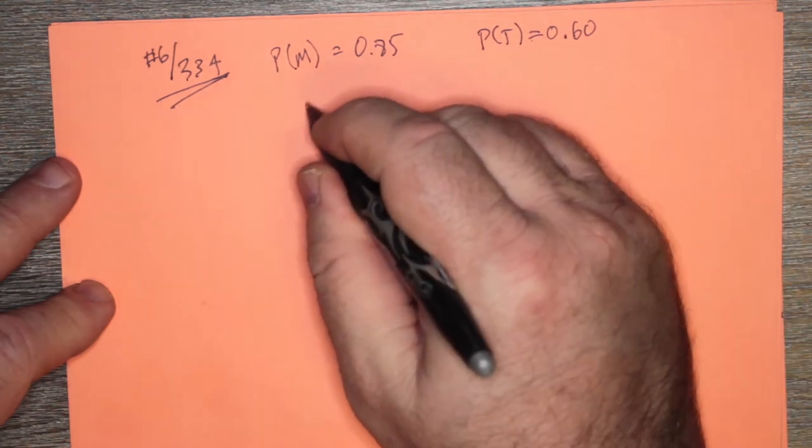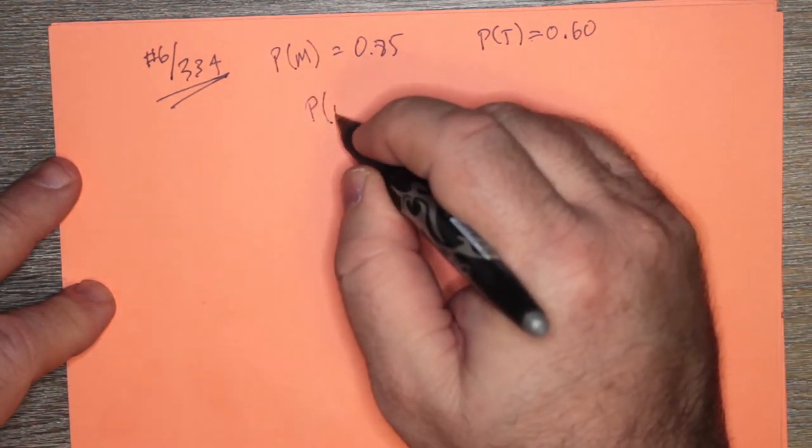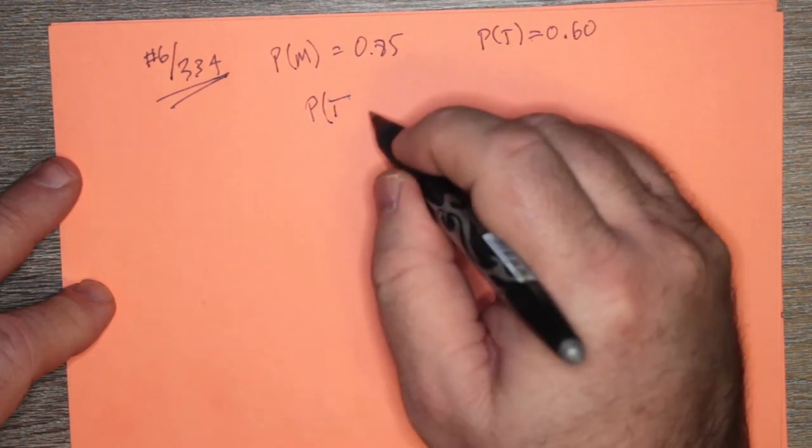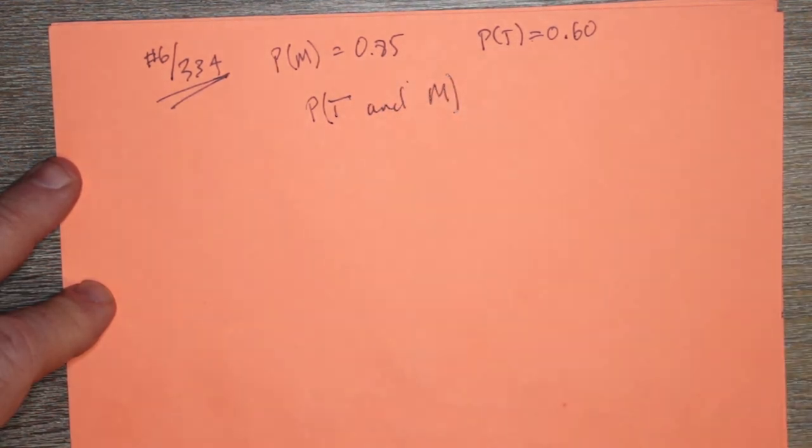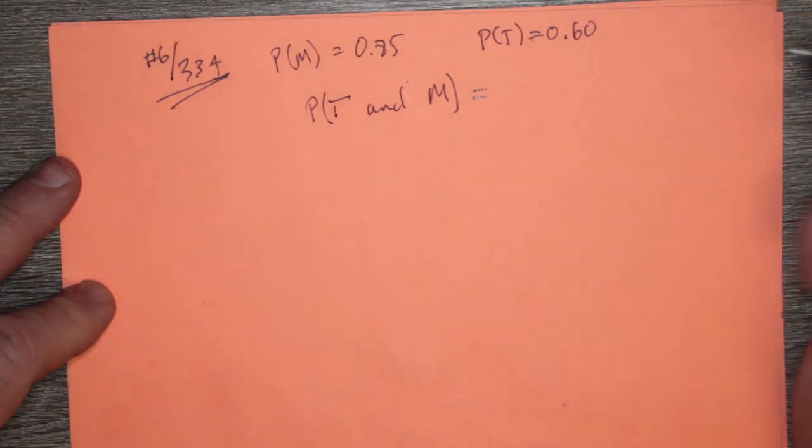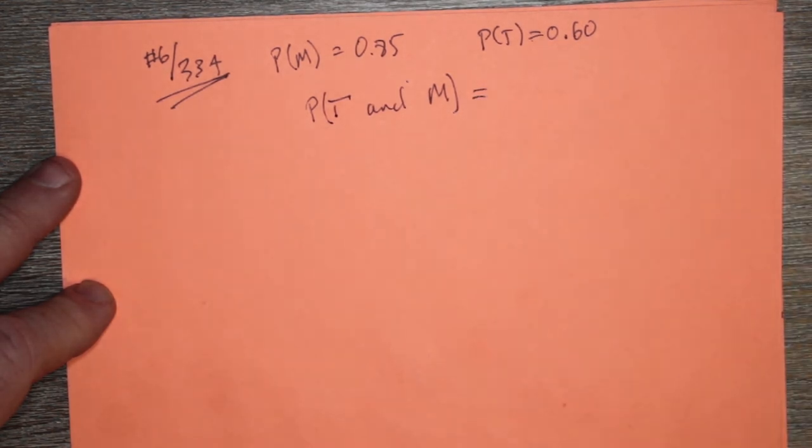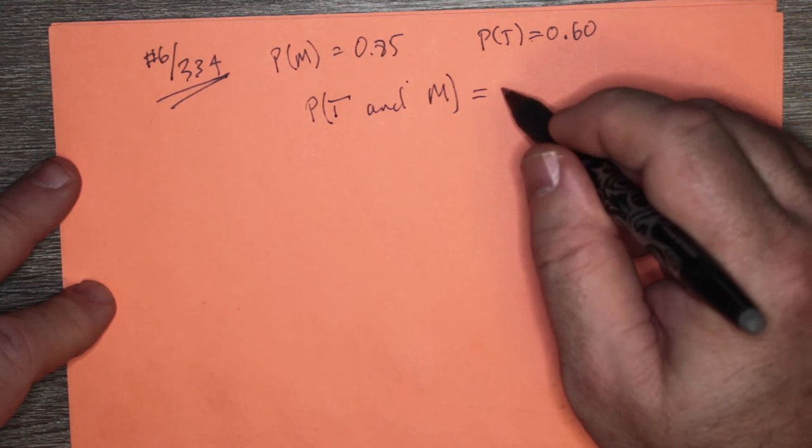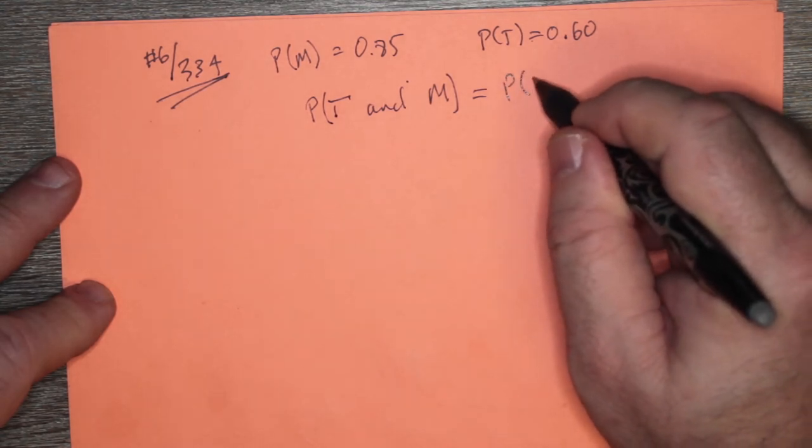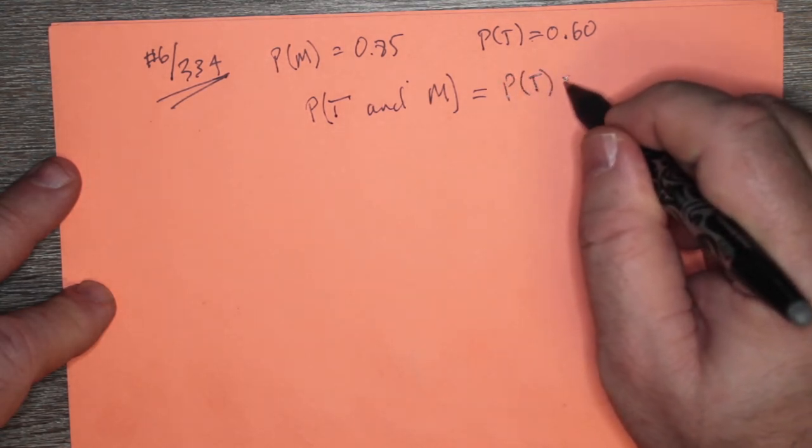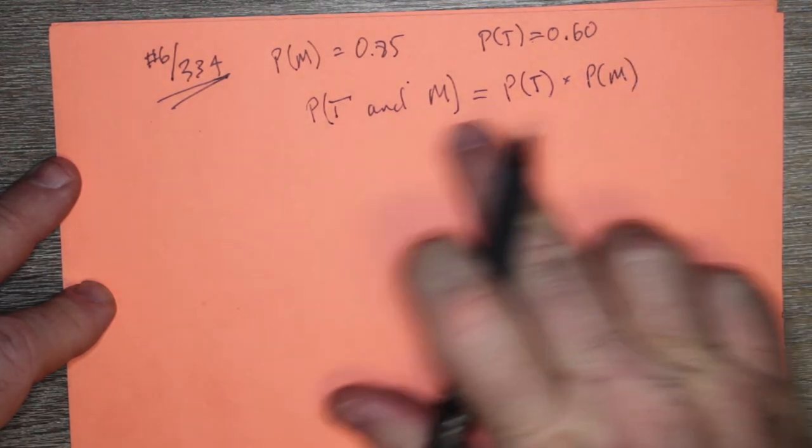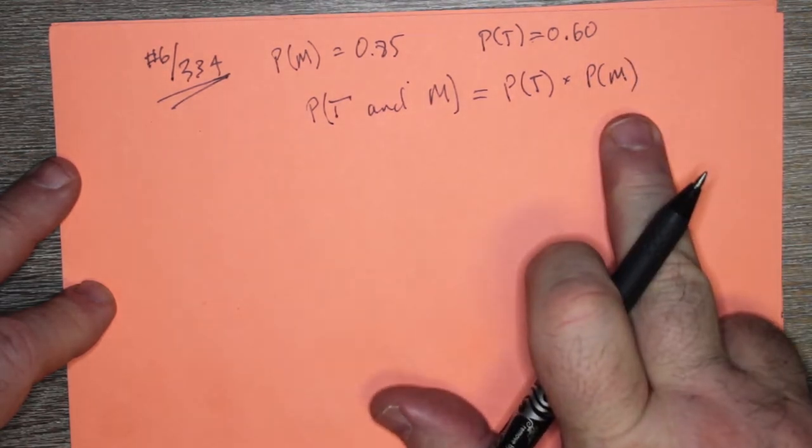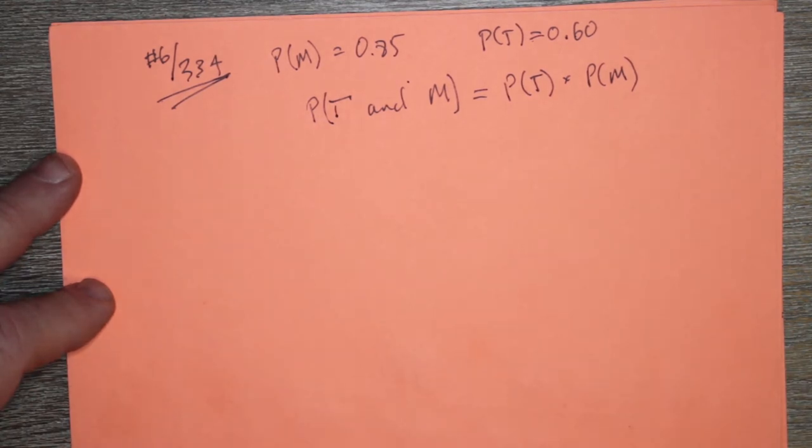So then, the probability that Tenzin will summon the courage and Michaela will say yes is equal to the product of the two. These are independent events. So this is going to be P of T times P of M. So this is actually the product rule for independent events.